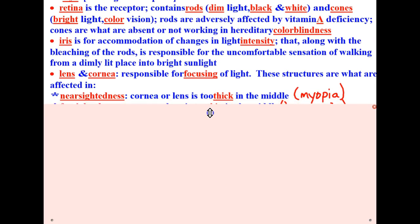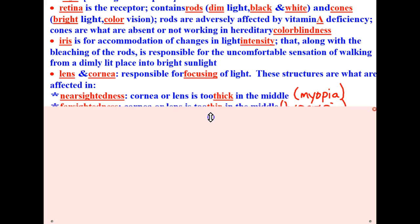We'll start with nearsightedness. Nearsightedness, which is the ability to see things close to you but not far away, is when the cornea or lens is too thick in the middle. The term for this is called myopia. Farsightedness is the ability to see things far away but not things close to you. This is when the cornea of the lens is too thin in the middle, and the technical term for this is hyperopia.